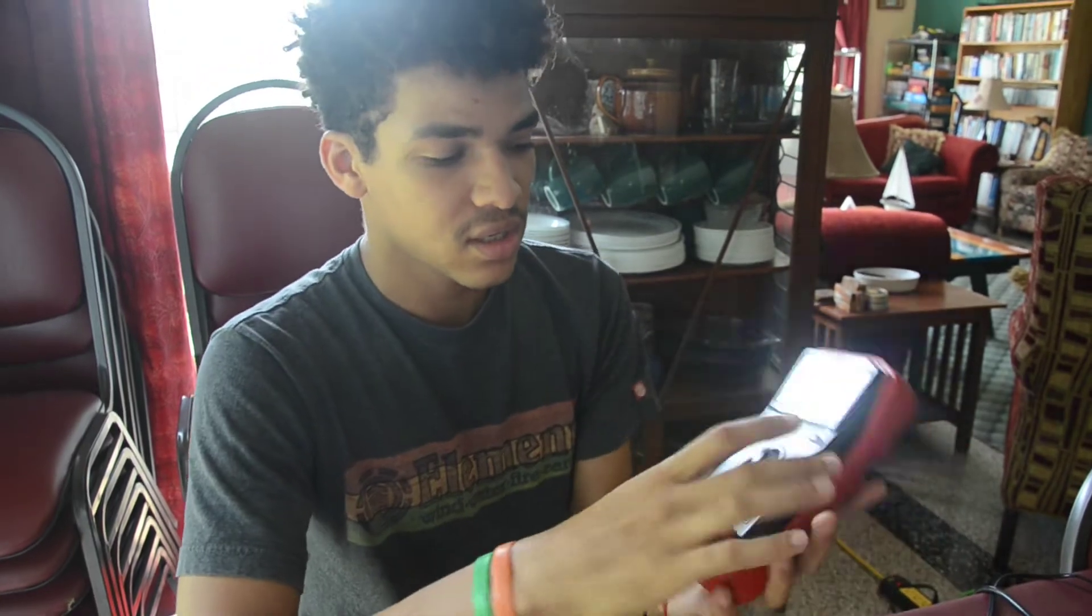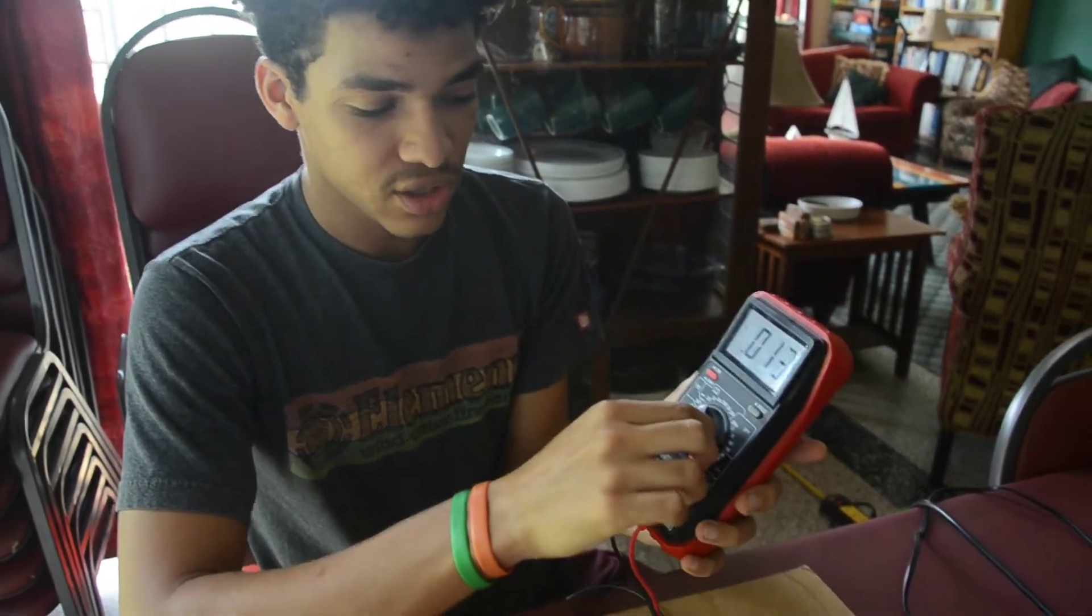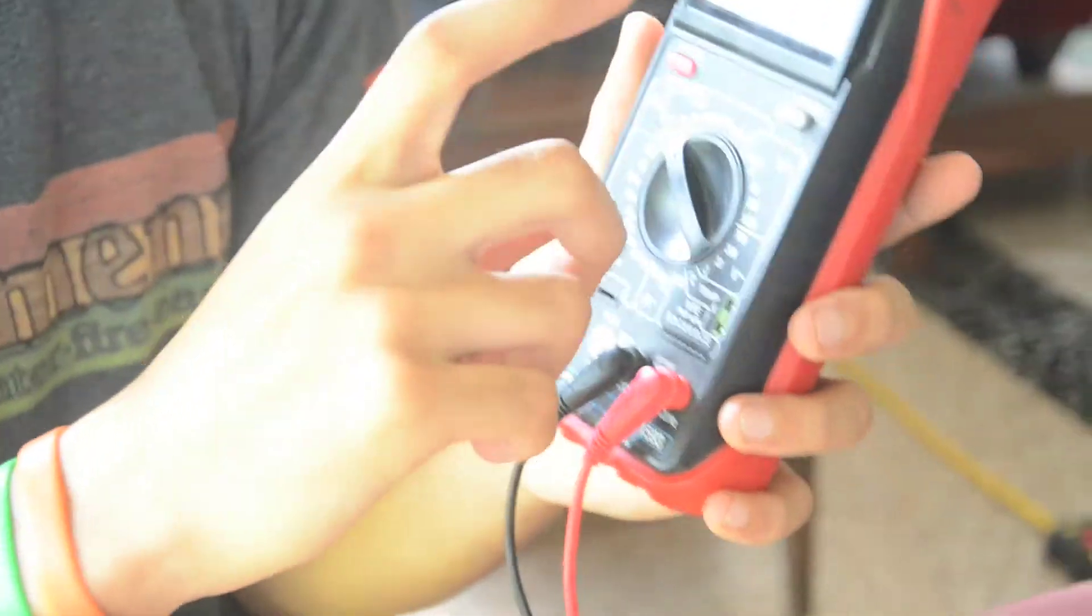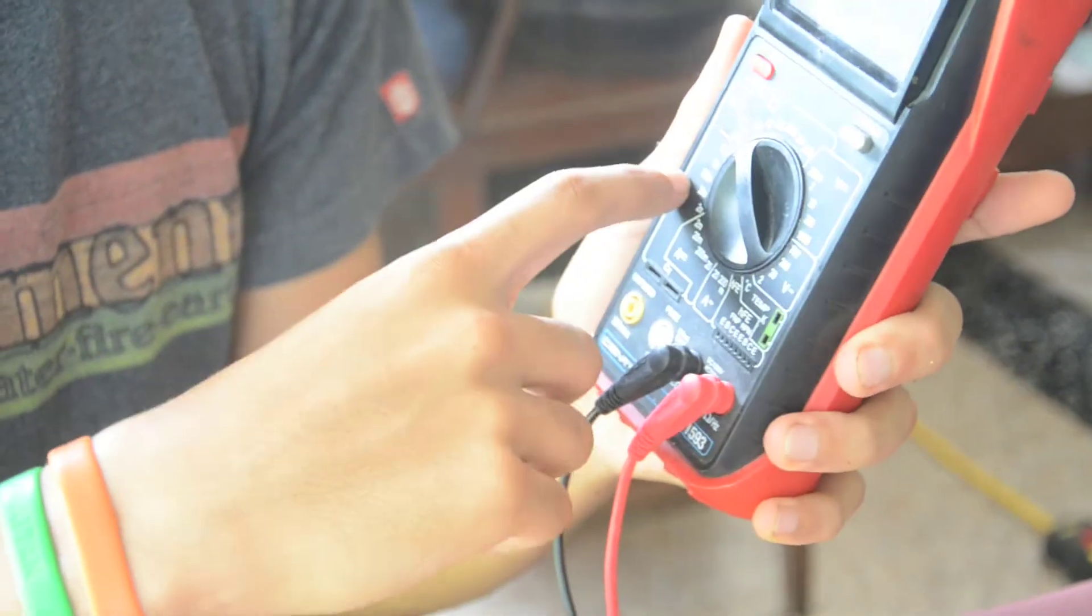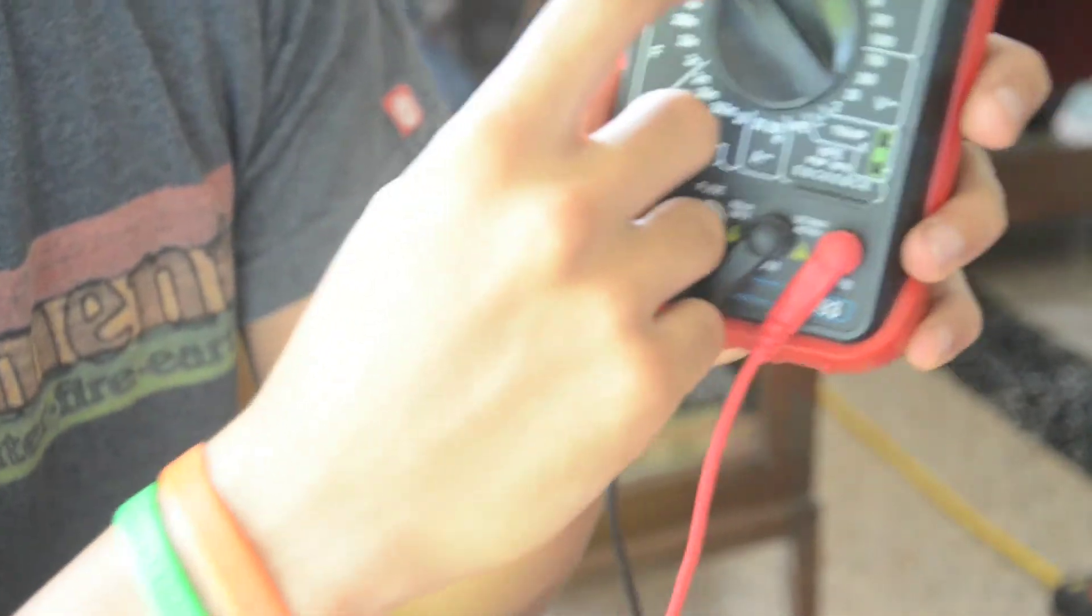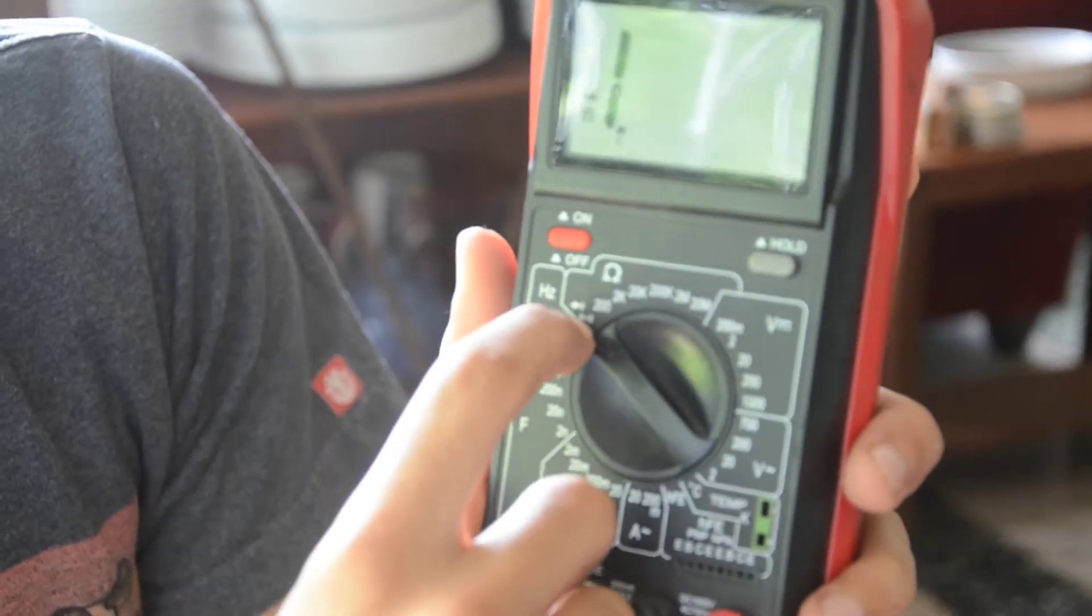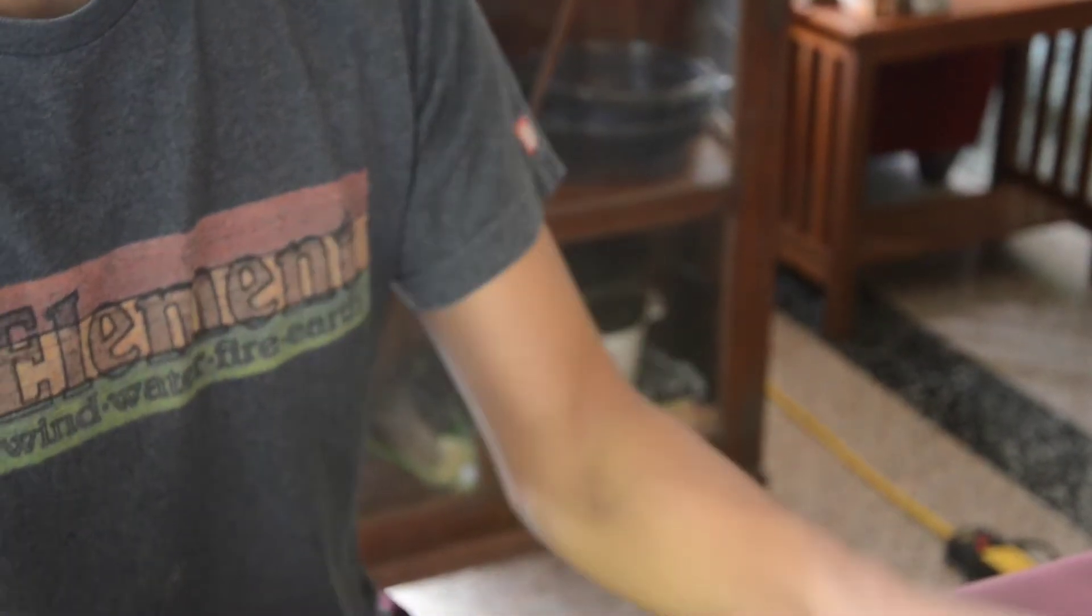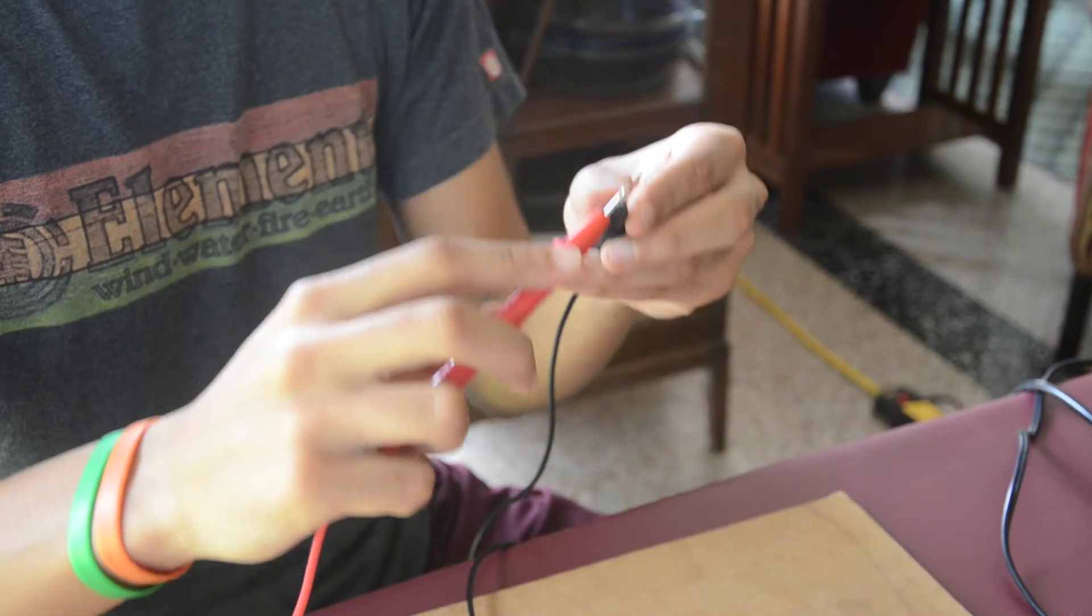First, you're going to need a multimeter and turn it to the continuity tester setting, which might not be the same on your multimeter, but it should be a little sign like a circle with some lines, almost like Wi-Fi lines. Once you have it there, just make sure when you touch the leads together, it's beeping.